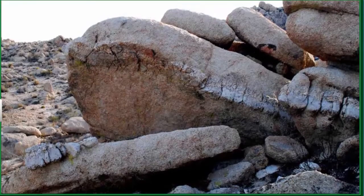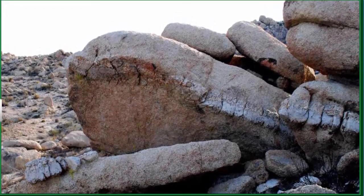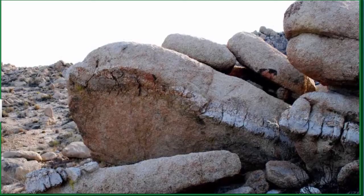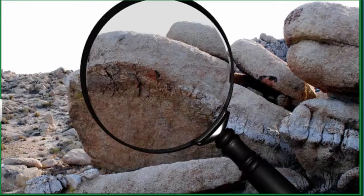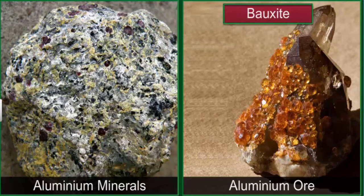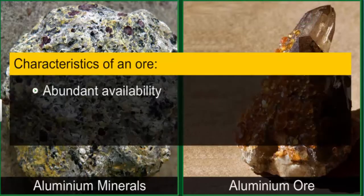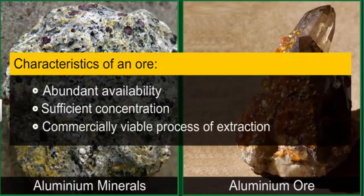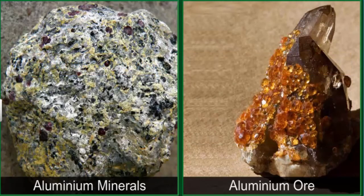If we start looking for minerals in the earth's crust, we will find them in some very interesting formations. It is interesting to know that aluminium is found in around 150 known minerals, but only one of them, bauxite, is majorly used to extract aluminium. Abundantly available minerals that offer sufficient concentration of an element and a commercially viable process of extraction are called ores of that element. Thus, bauxite is an ore of aluminium.